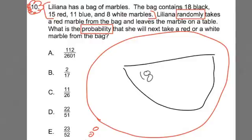I got 18 black and, you know, I got 11 blue and I got 15 red and I have 8 white marbles. See that? Then it says Liliana takes one of the red. Now this is important. She takes one of the red and she takes it out of the bag, reaches into the bag, takes it and removes it, leaves it on the table somewhere. So that means there's no longer 15 marbles there. There's really 14 marbles at this point.